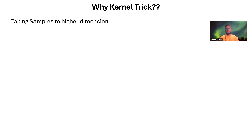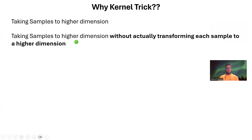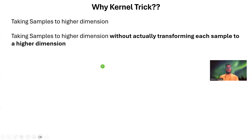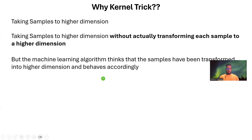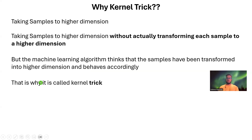After this slide, I will show you why transforming a sample to a higher dimension can be critical and important. The next point is that kernel trick doesn't actually take the sample to a higher dimension explicitly — it implicitly does it. You don't actually have to transform the samples yourself. Your machine learning algorithm will think that the samples have indeed been transformed into a higher dimension and will behave accordingly.